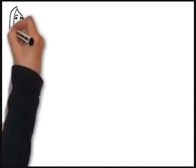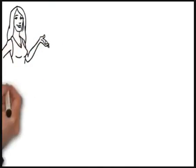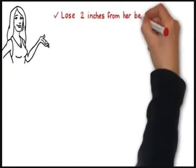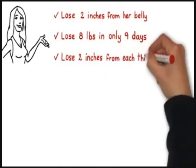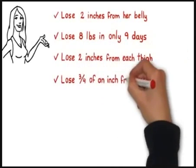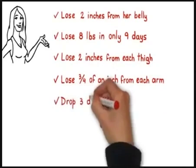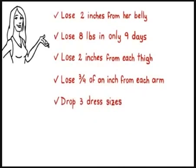This one specific tip that I'm about to share with you right now helped my wife, Lori, to lose two inches from her belly, lose eight pounds in only nine days, lose two inches from each thigh, lose three quarters of an inch from each arm, drop three dress sizes at the age of 30, by the way.